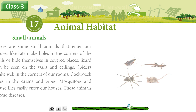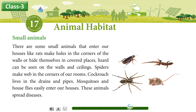Small Animals. There are small animals that enter our houses. Rats make holes in the corners of the walls or hide themselves in covered places. Lizards can be seen on the walls and ceilings. Spiders make webs in the corners of our rooms. Cockroaches live in the drains and pipes. Mosquitoes and houseflies easily enter our houses. These animals spread diseases.